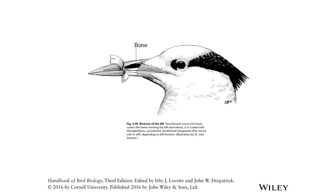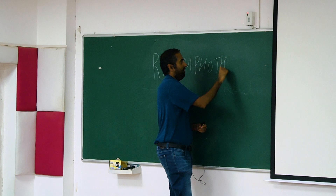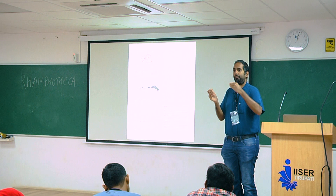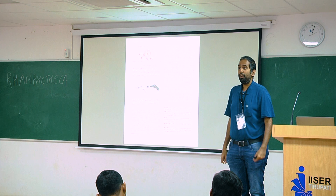This keratinous covering is called a ramphoteca. A bird bill is a composite of two materials, just like fiberglass. And a composite of two materials gives you great resistance to fracturing. What might a bill do that it needs to resist fracturing? This is a parrot skull, in case you could tell.